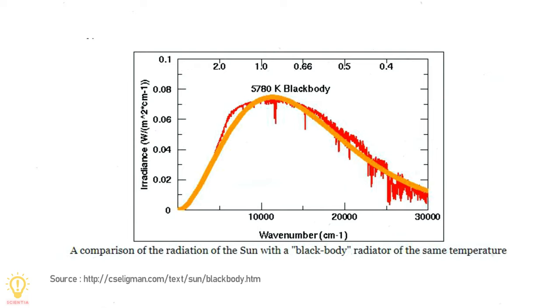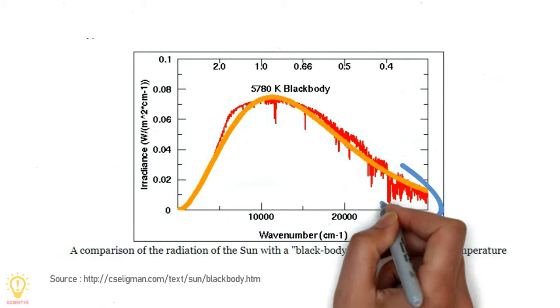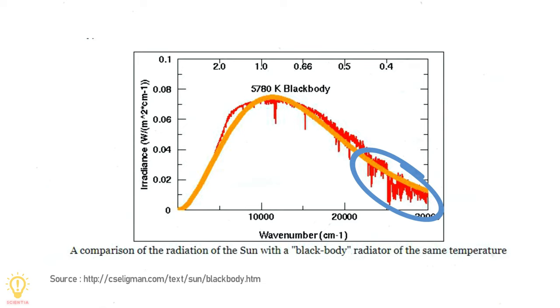The spectrum of the Sun is shown in red and that of a black body in orange. Overall, the spectra look similar for both, but at some locations the red spectrum of the Sun dips below the orange spectrum of the black body, representing the absorption of radiation at those wavelengths.